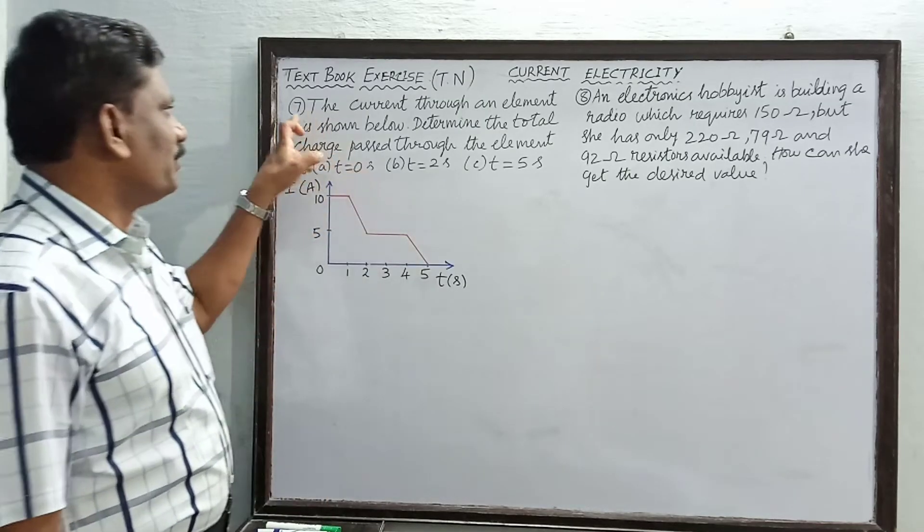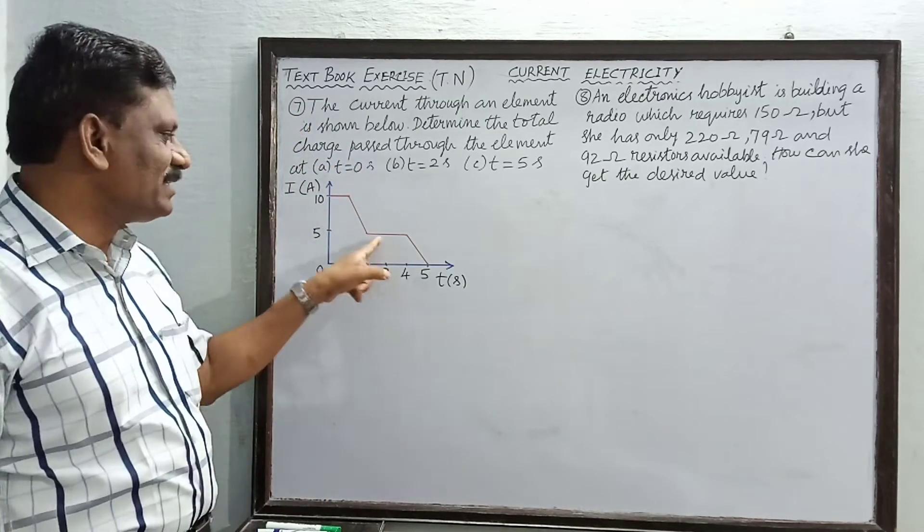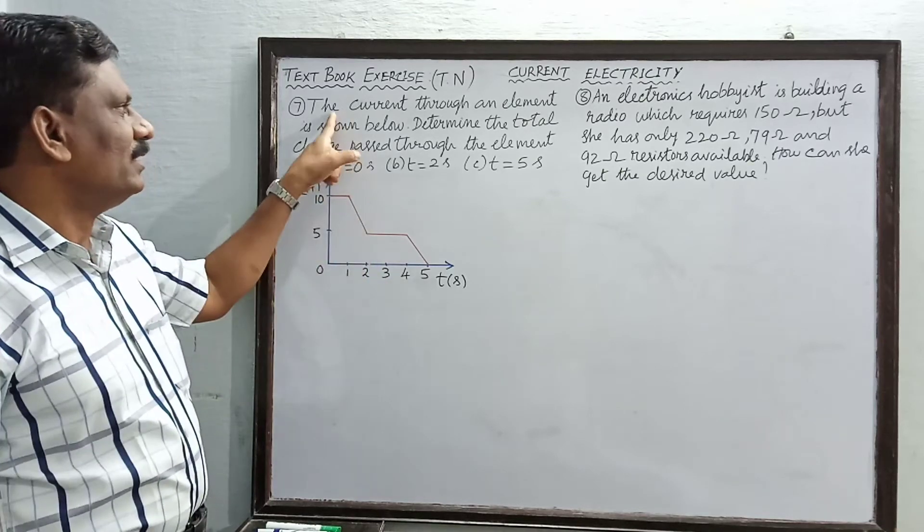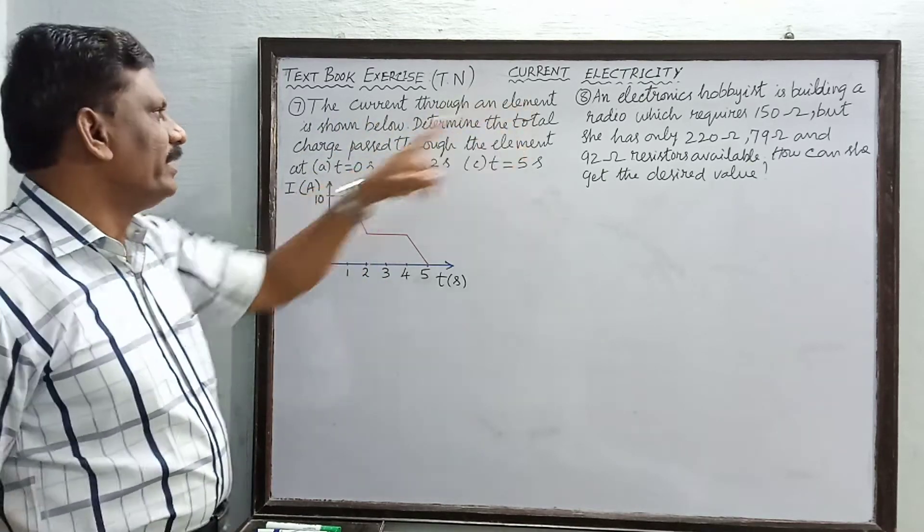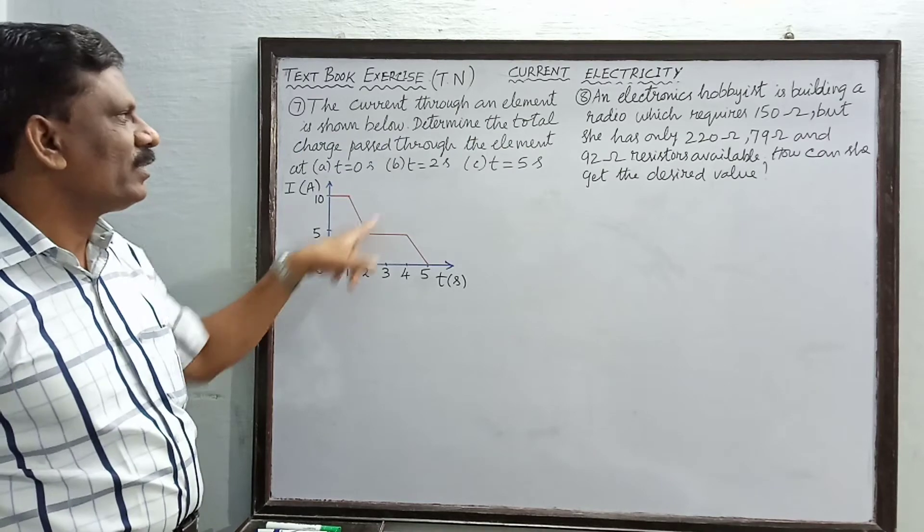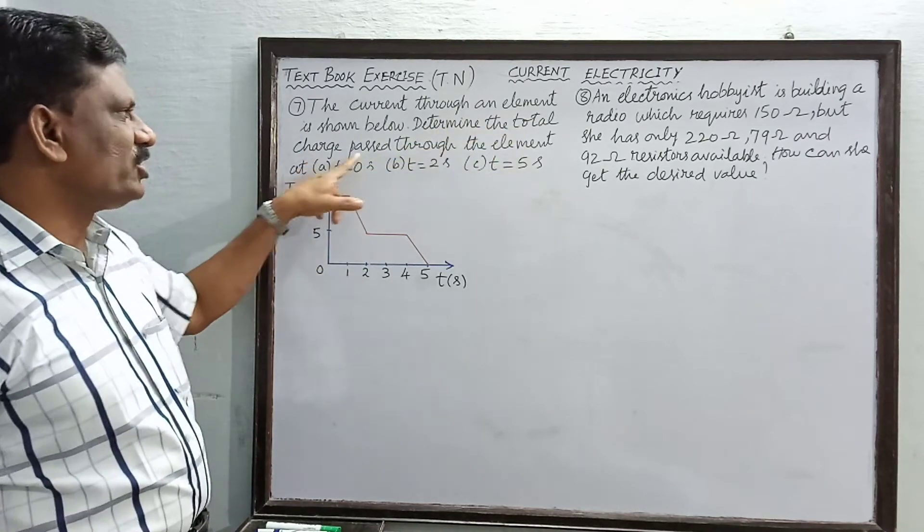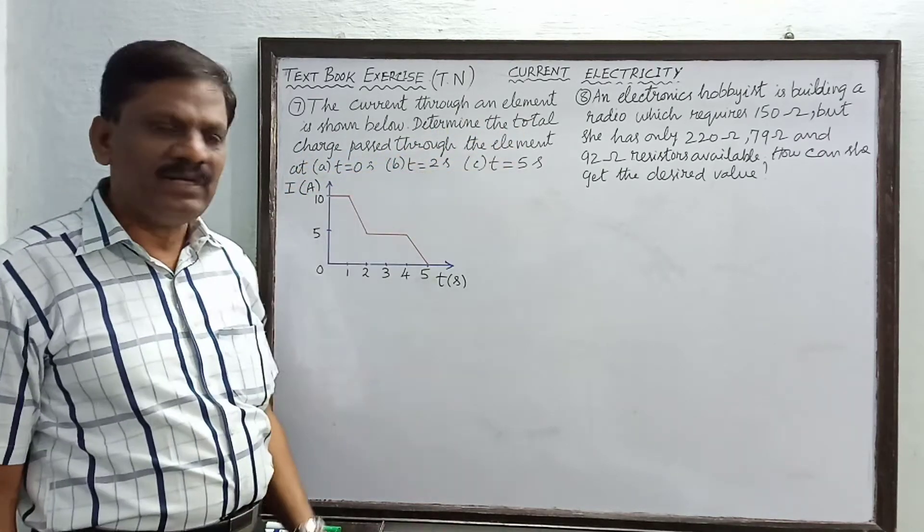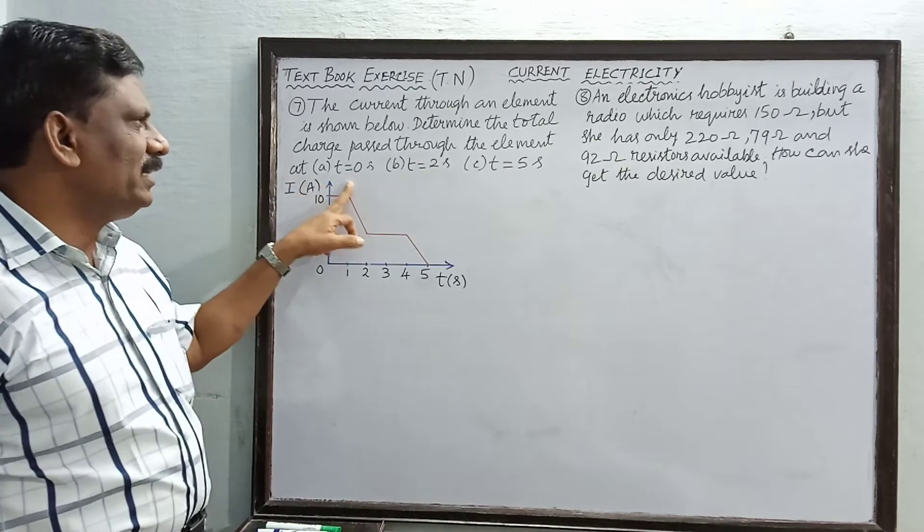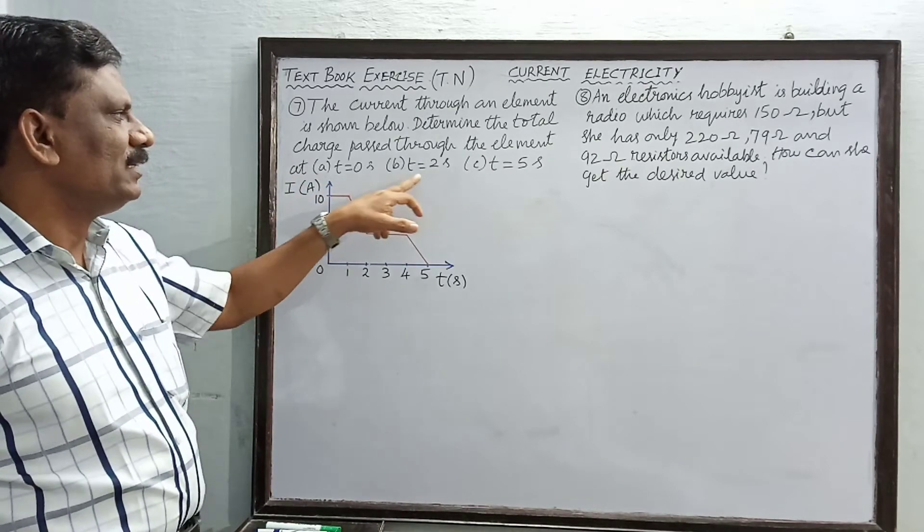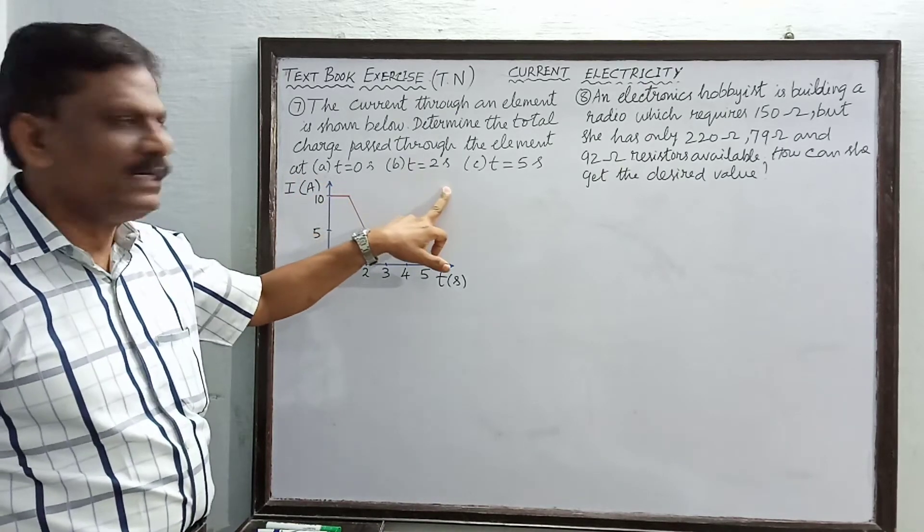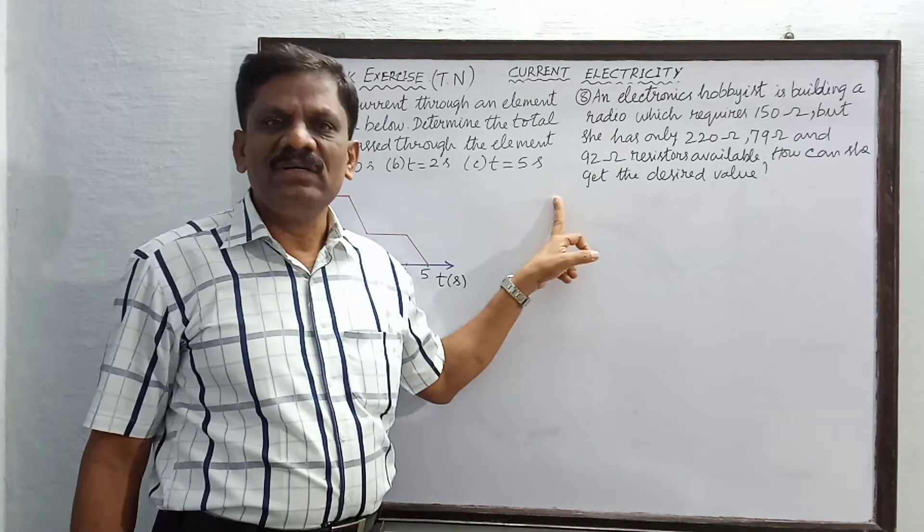Hi students. Problem number 7 is based on this graph. The current through an element is shown below. Determine the total charge passed through the element at time t equal to 0 seconds, t equal to 2 seconds, and t equal to 5 seconds.